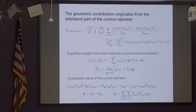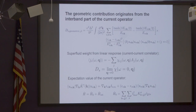This also reminds you that the geometric part involves some kind of virtual interband processes — and that's why you can get transport of Cooper pairs also in the flat band.